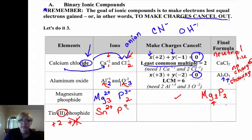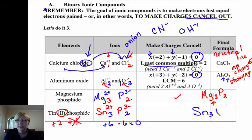Phosphide we just saw is minus three. The least common multiple is six. Three times plus two is plus six. Two times minus three is minus six. So I have plus six, minus six, and that does indeed equal zero. So Sn3P2. And we're going to practice this in class.